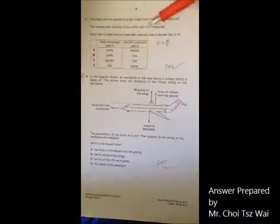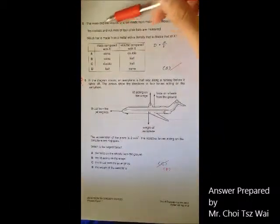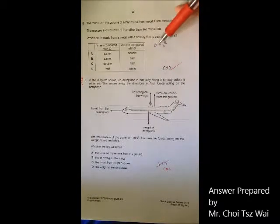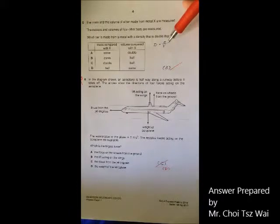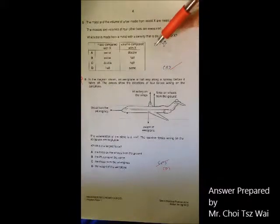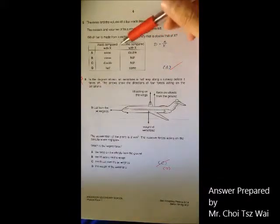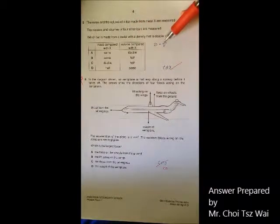Question 5. Use the formula D equals to M over V. If you are good with mathematics, you will know that by keeping one of the parameter constant and changing the other, you will get a corresponding change on the D.